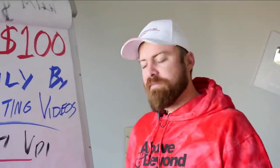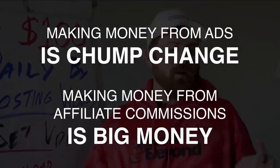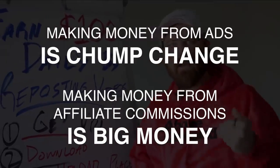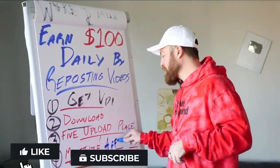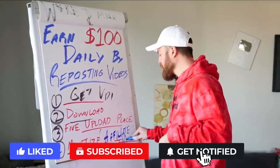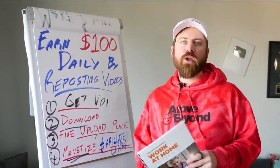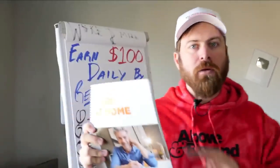The most important way of monetizing is actually not making money from the ads — making money from ads is chump change. Making money from affiliate commissions is big money. I'm going to show you how you can make money by putting affiliate links underneath or within each of these videos so you can earn recurring revenue. Specifically, I'll show you how you can sell my book — a digital workbook for $1, which sells in any country in the world.